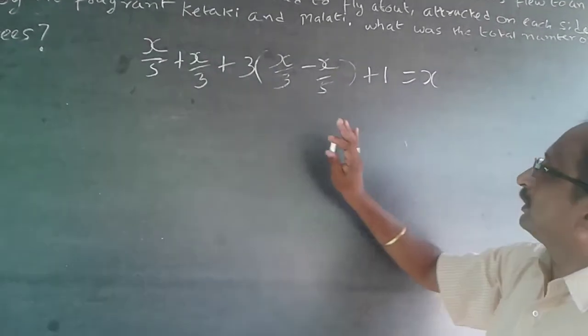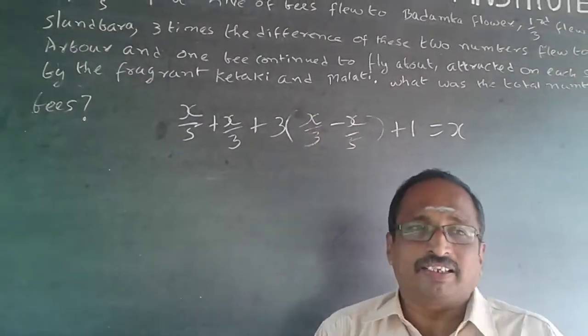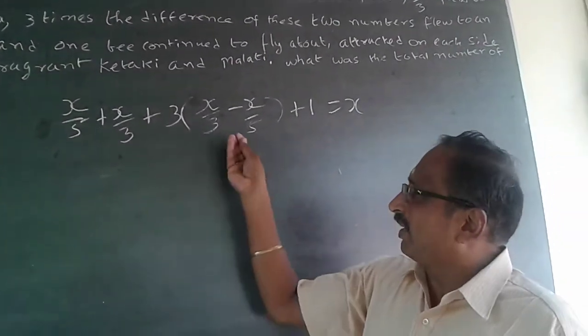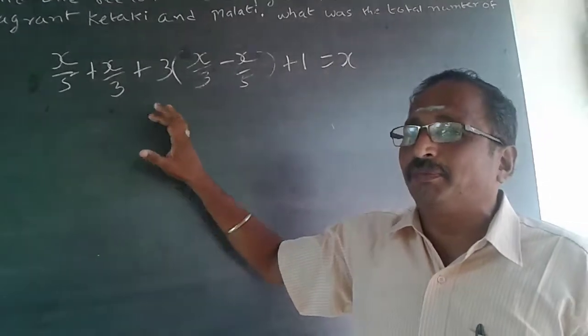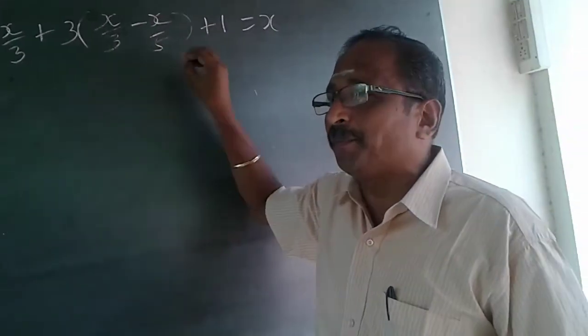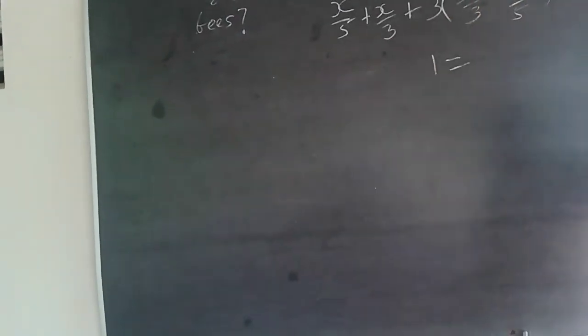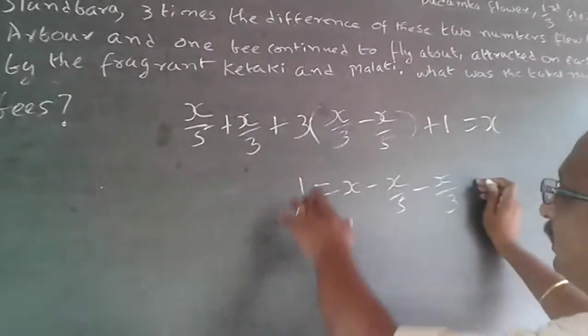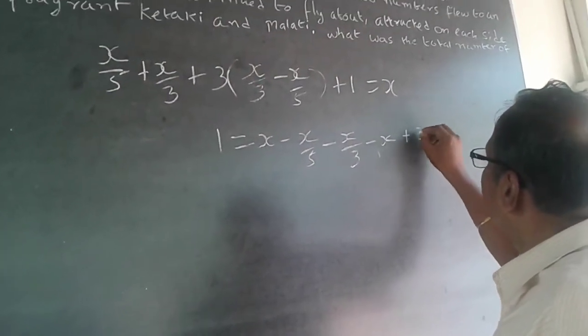Now, solving equations - don't try to find LCM immediately. Take all your variables to one side, numbers to the other side - it becomes easier to solve. So I'll take one here and move all variables to the other side: x minus x/5 minus x/3, then this becomes 3x/3 which cancels out to minus x, and this comes here as plus 3x/5.